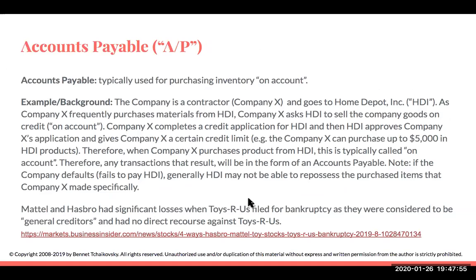Accounts payable is typically used for purchasing inventory on account. For example, if a company is a contractor and goes into Home Depot — say Company X is a frequent purchaser of materials — instead of having workers pay by credit card every time, Company X asks Home Depot to sell goods on credit. Company X completes a credit application, HDI approves and gives a credit limit of up to $5,000. Purchases from HDI are recorded as accounts payable, and if Company X defaults, Home Depot may not be able to repossess those purchased items.